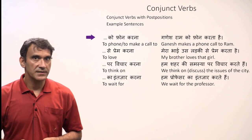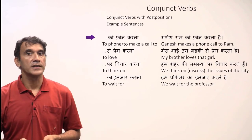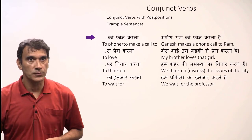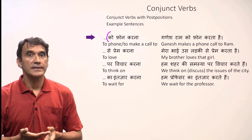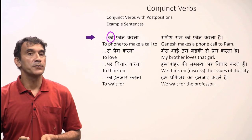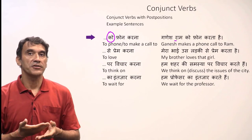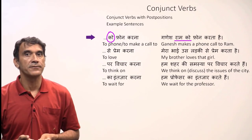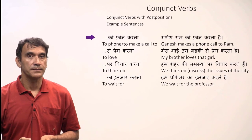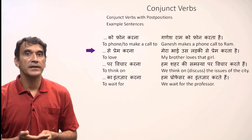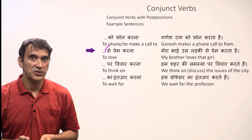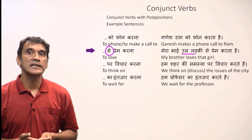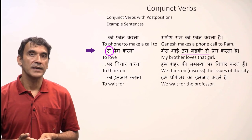Let's take some example sentences. 'Phone karna', to make a phone call, goes with the postposition 'ko'. 'Ganesh Ram ko phone karta hai' — Ganesh makes a phone call to Ram. 'Prem karna', to love, goes with the postposition 'se'. 'Mera bhai us ladki se prem karta hai' — My brother loves that girl.